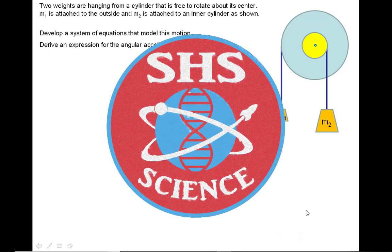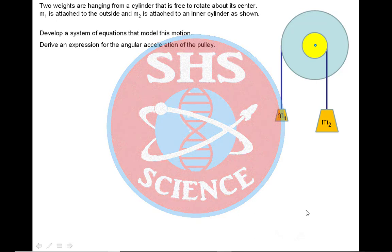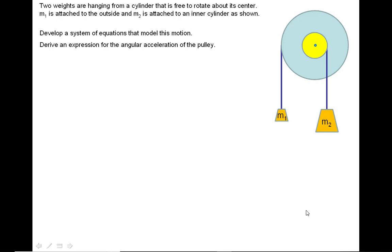Alright, so this problem is going to take a little bit of algebra, so just stay with me. Here we have kind of two pulleys hooked up together. We have two weights on each of the little pulleys that are hooked to each other. And this thing is going to rotate and we want to figure out, first we want to develop a system of equations that model this motion and then we're going to figure out an expression for the angular acceleration.